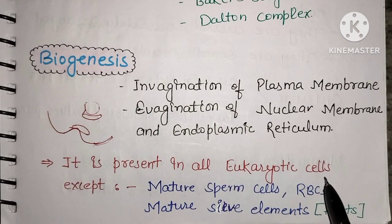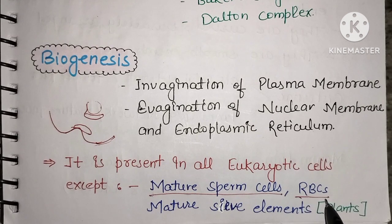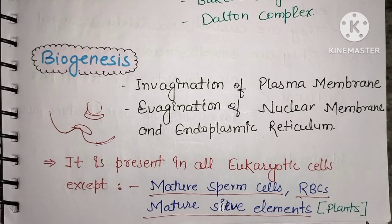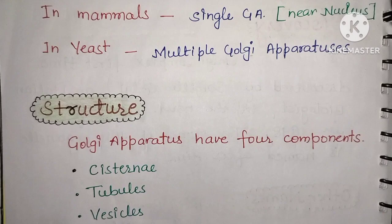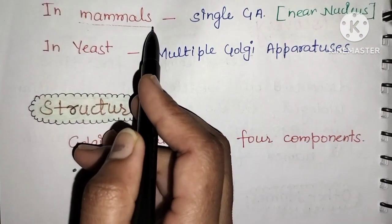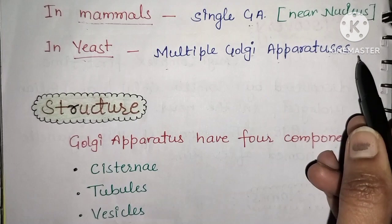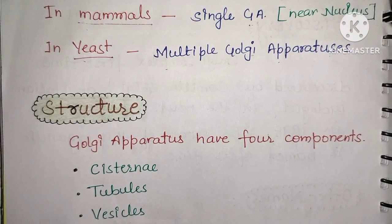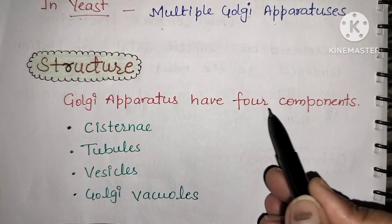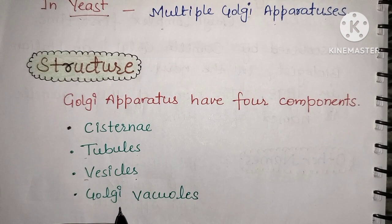Golgi apparatus is present in eukaryotic cells, but there are some exceptions. For example, mature sperm cells, red blood cells, and mature sieve elements do not have Golgi apparatus. Some organisms have a single Golgi apparatus, while others have multiple Golgi apparatus. Now let's look at the structure of the Golgi apparatus, which has four main components.